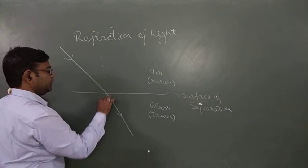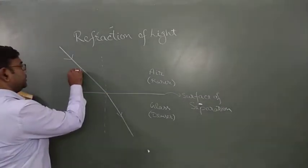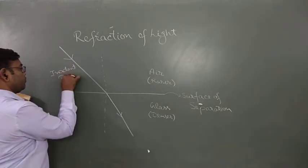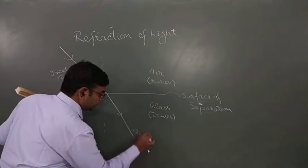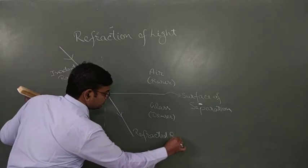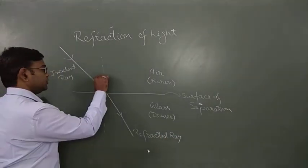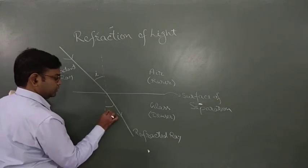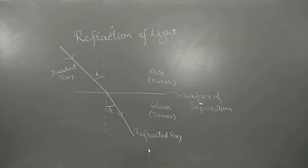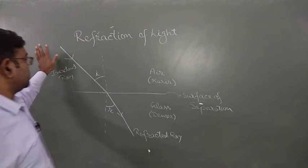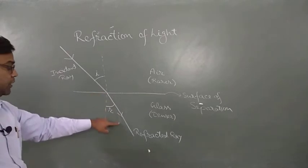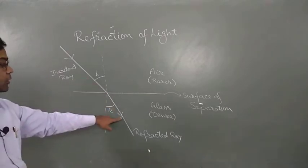This is your imaginary normal, this is your incident ray, and this is your refracted ray — not reflected, it is the refracted ray. This is your angle i and this is your angle r. So the concept is: when a light ray travels from a rarer medium towards a denser medium, it shifts a little bit towards the normal.